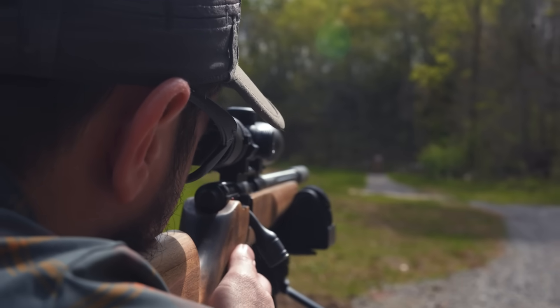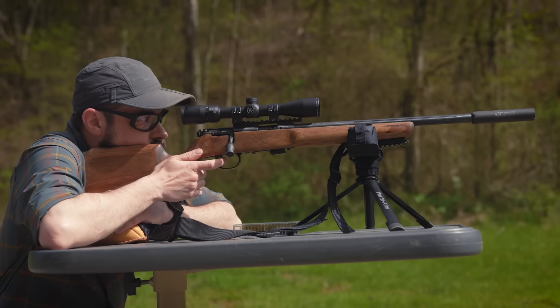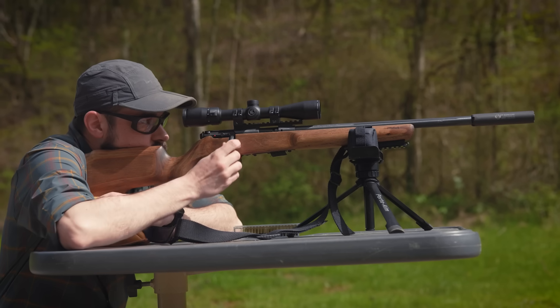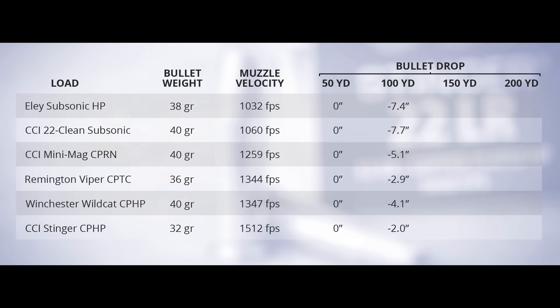In the comments of that last video, some of you mentioned using your .22s to take out squirrels and prairie dogs and other pests at 100 yards and beyond. So for these six loads, we fired five round groups from a bench rest at 50, 100, 150, and 200 yards. We zeroed our rifle at 50 yards, so that is our starting point. At 100 yards, the subsonic loads dropped more than seven inches. The Stinger has about 50% more velocity than those, and it only dropped two inches.